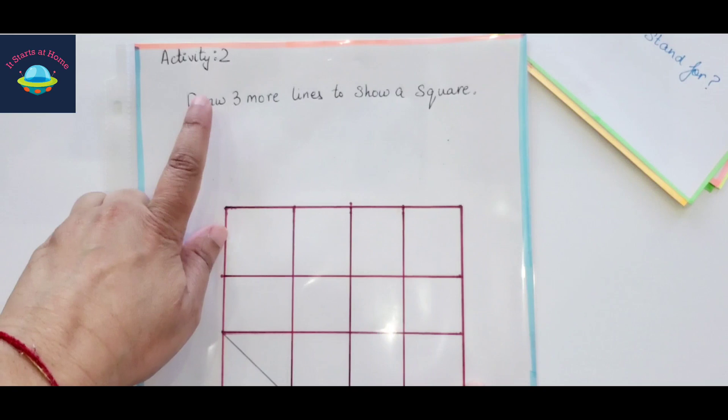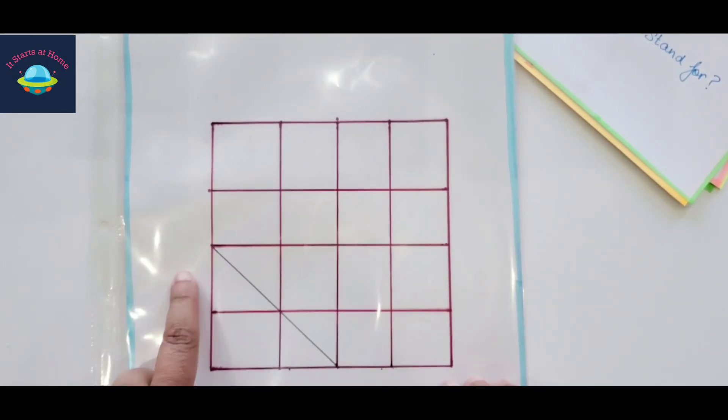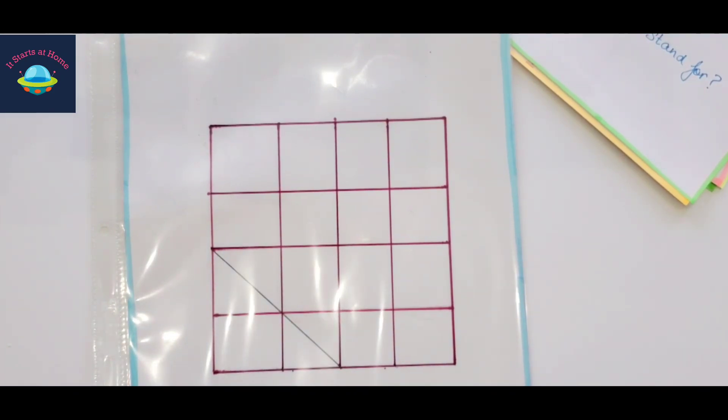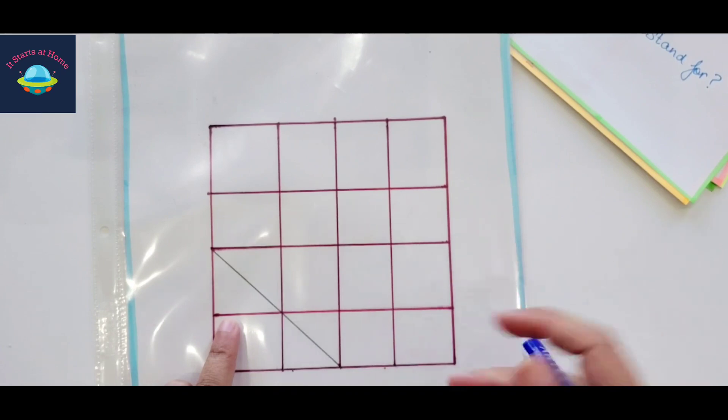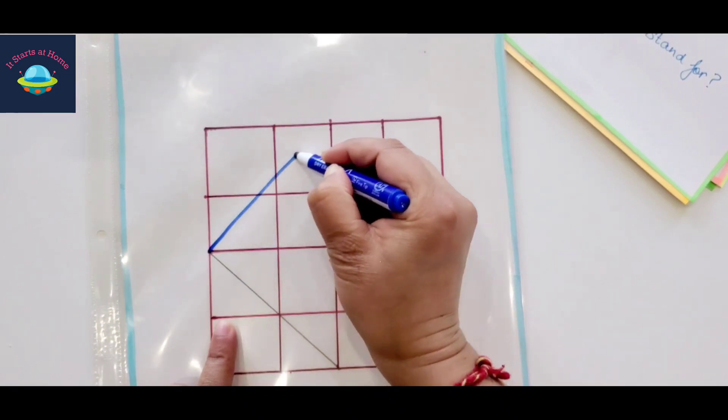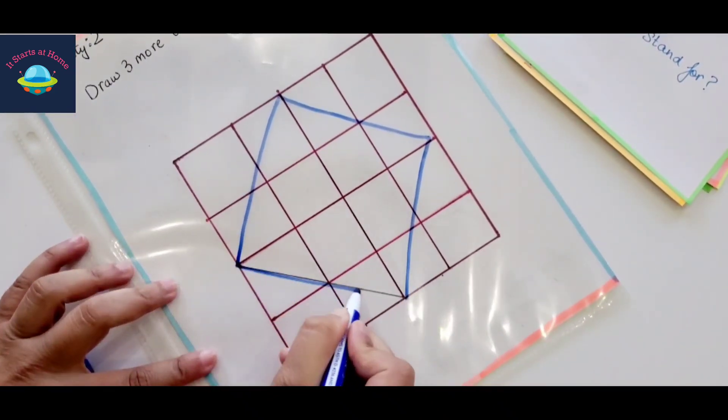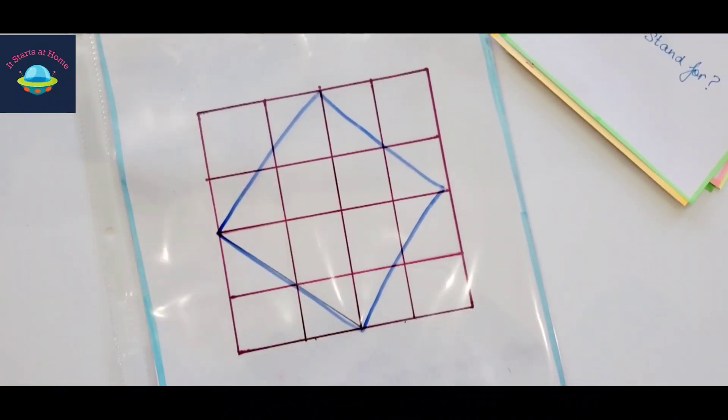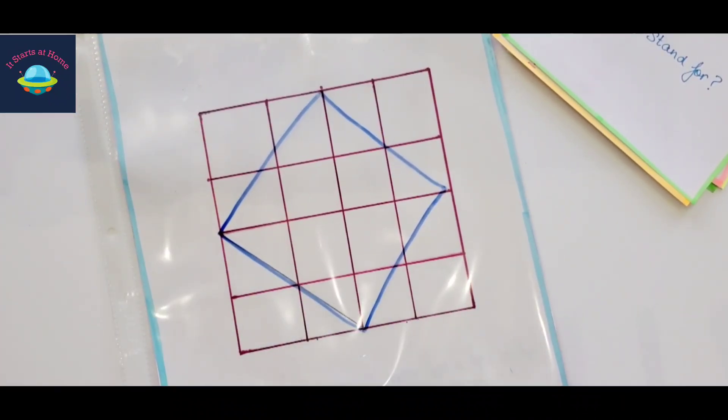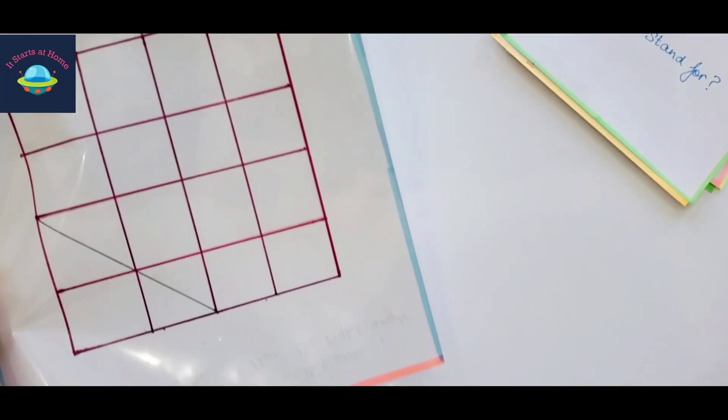Activity number two: draw three more lines to show a square. So again, a 4x4 here and this is the starting line. To begin with, if the child needs to make a square, they have to figure it out because this is the one line, right? So the best way to make would be a line here. I am going to do this one also so that you can see it. So that's how by adding three more lines, they are going to show a square.